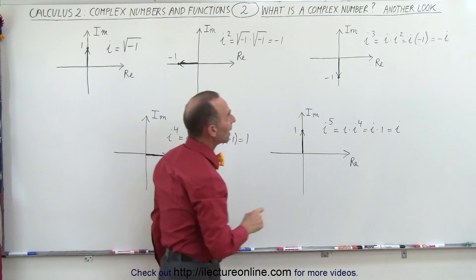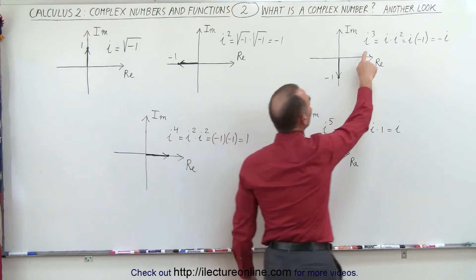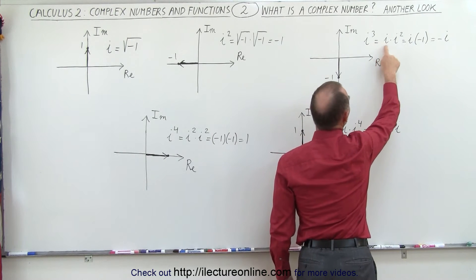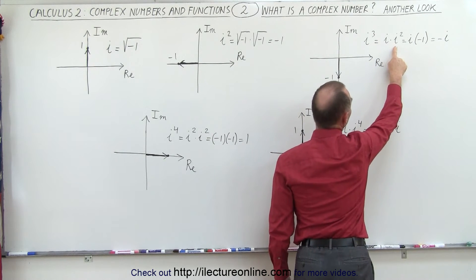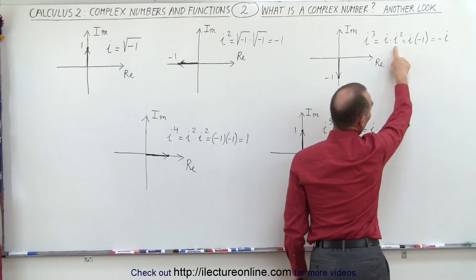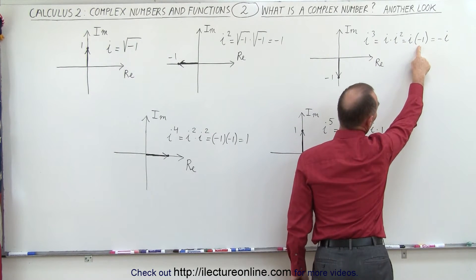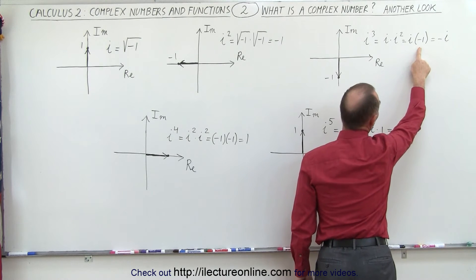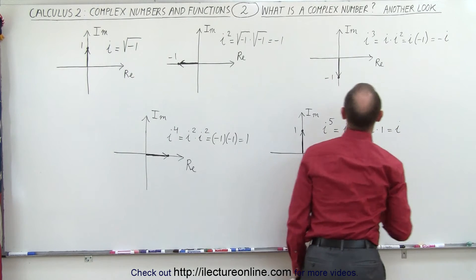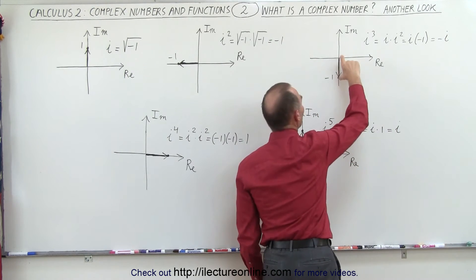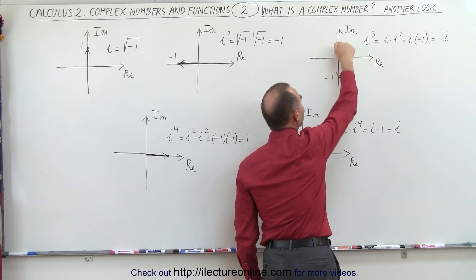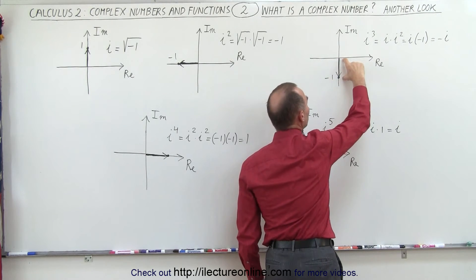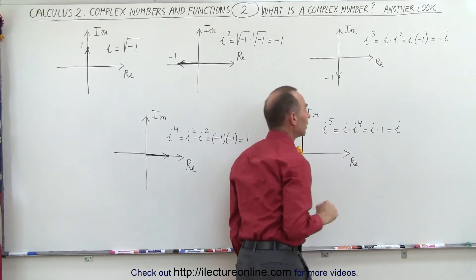If we now take i cubed, we can say that's equal to i times i squared. And since i squared is equal to negative one, we get i times negative one, which is negative i. And now we have a small vector pointing in the negative imaginary direction, a unit one long.